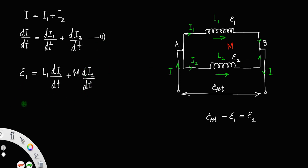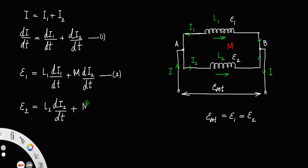The EMF across the second coil, E2, will also be due to two reasons: one, the self-induction of the coil itself, that is L2 times dI2/dt, since the current flowing through the second coil is I2, plus mutual induction M times dI1/dt. This is equation number 3, similar in form to equation 2.